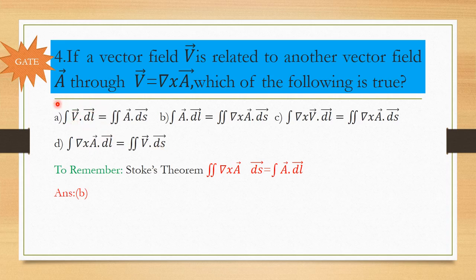By Stokes theorem, line integral of a vector equals surface integral of the curl of that vector. In option B, we have line integral of A⃗·dL⃗ equal to surface integral of (∇×A⃗)·dS⃗ — this is exactly Stokes theorem. Option B is the right answer.